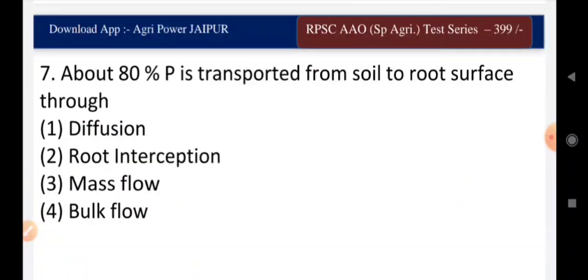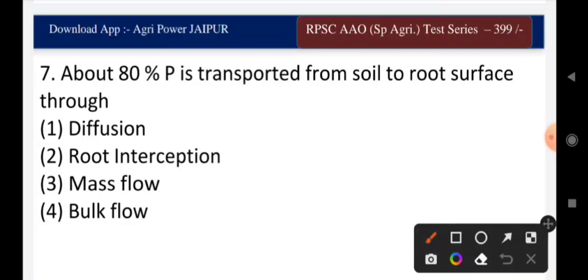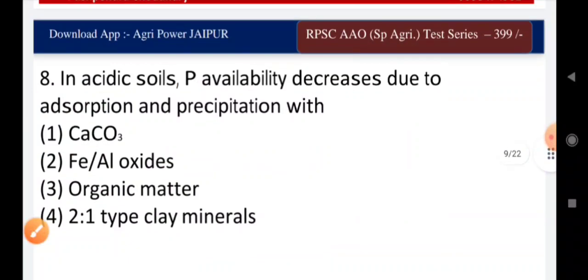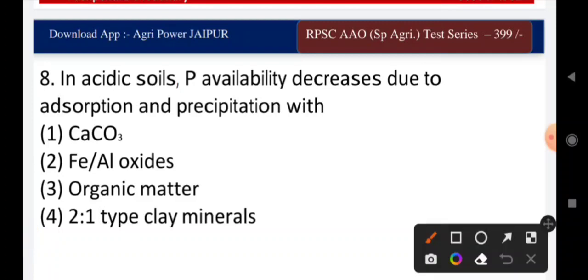Question eight: about 80% of phosphorus is transported from soil to root surface through — diffusion, root interception, mass flow, or bulk flow? The right answer is diffusion. Question nine: in acidic soils, phosphorus availability decreases due to absorption and precipitation with — calcium carbonate, iron and aluminum oxides, organic matter, or 2:1 type clay minerals? The answer is iron and aluminum oxides.